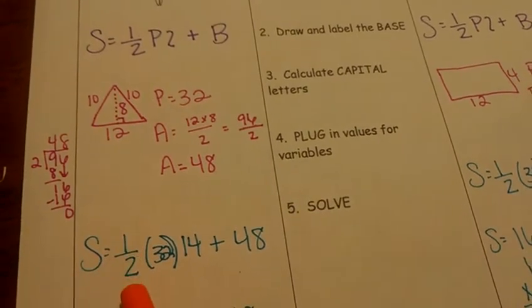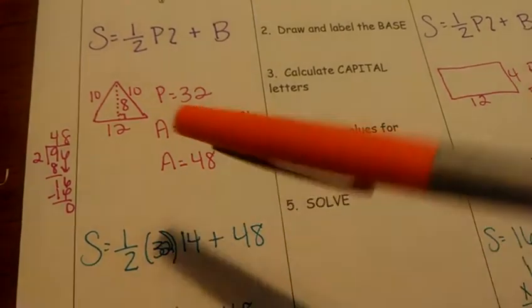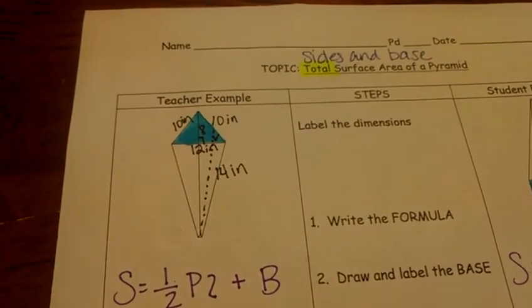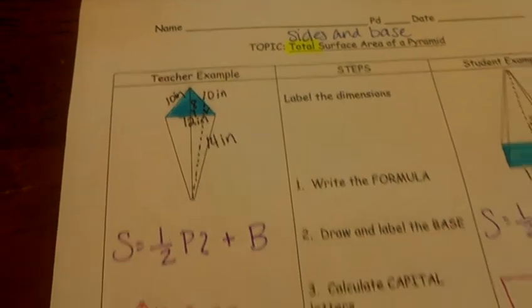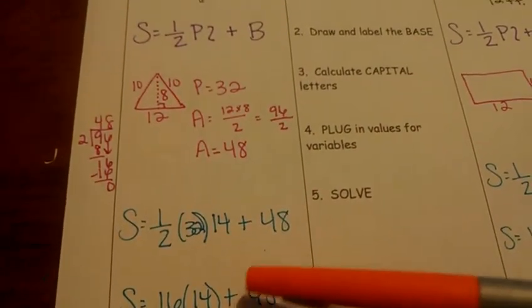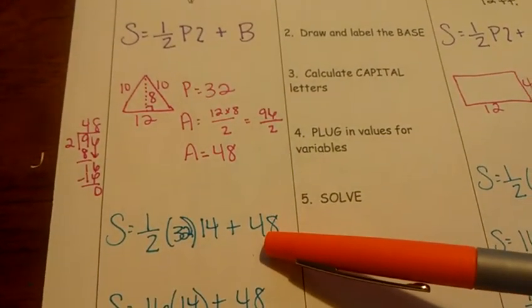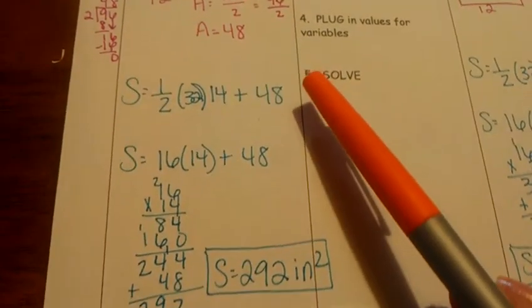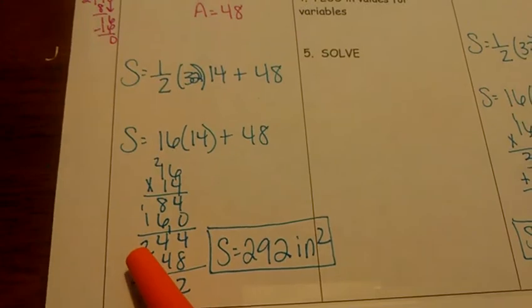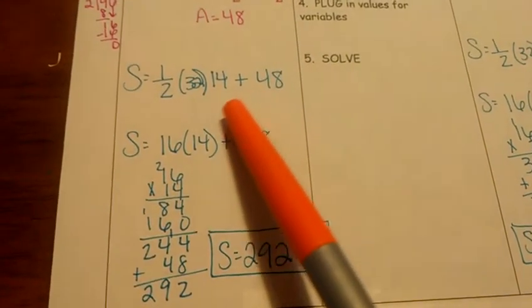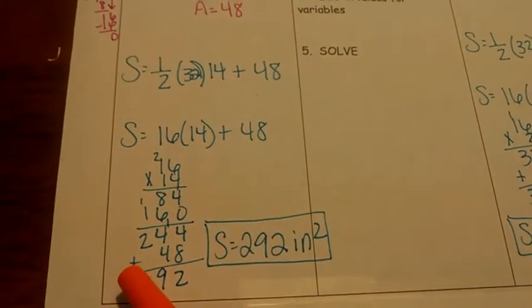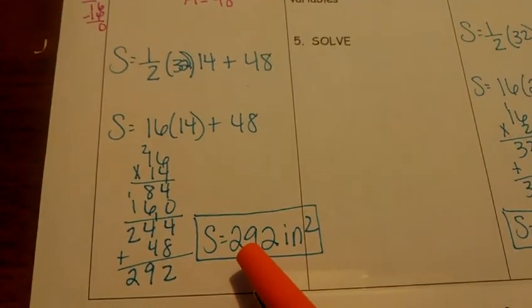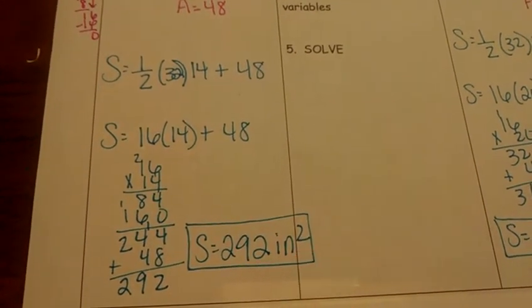Surface area is equal to half. Perimeter of the base, perimeter is 32, times my slanted height. My slanted height up here is 14, plus 48, area of the base. 16 times 14, you can see I've done the math right here, is 244. My last step is to add 48, so I've done that right here, adding 48. My surface area is 292 inches squared.